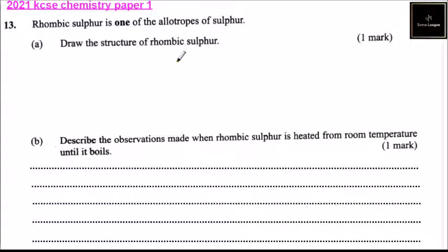Allotropy is a property of some chemical elements that exist in two or more different forms in the same physical state, known as allotropes of the elements. Sulfur has two: yellow rhombic sulfur and monoclinic sulfur.